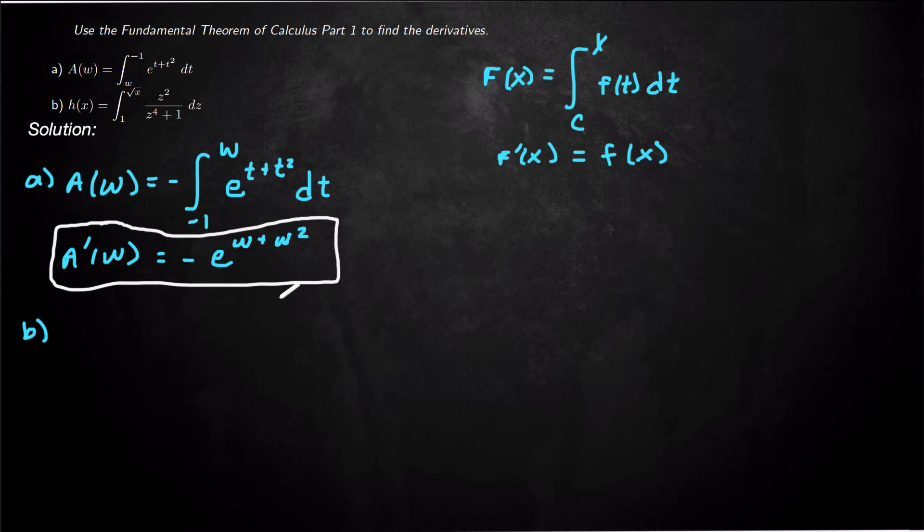Alright, so the second one, the upper bound isn't just x, it's square root of x. So h of x is actually a composition of an integral function, we'll call it capital F, of square root of x.